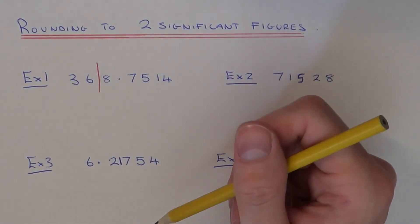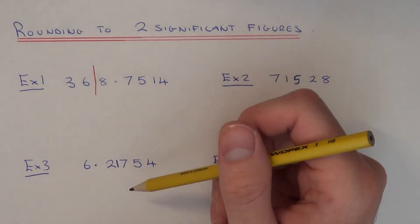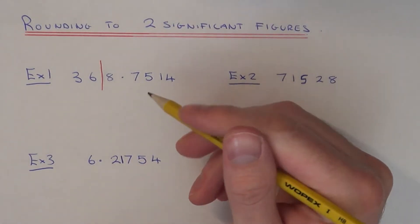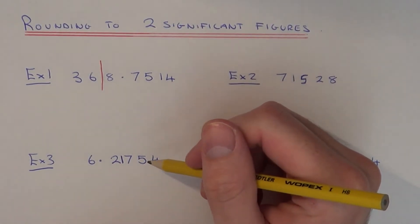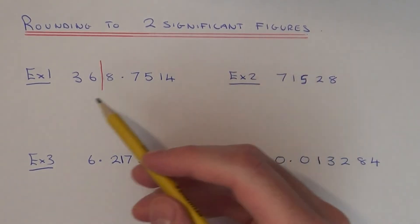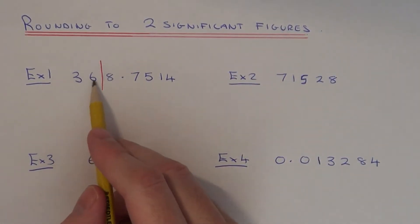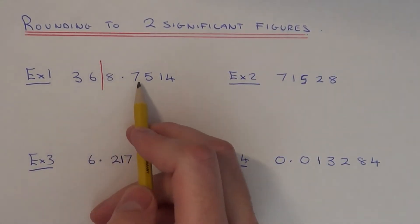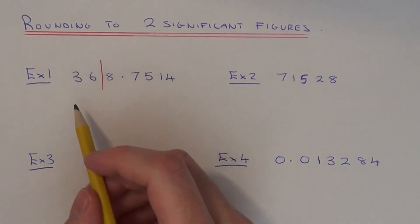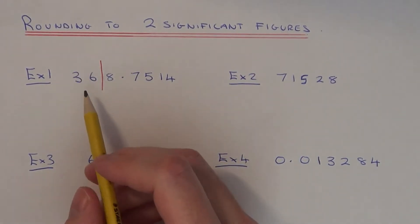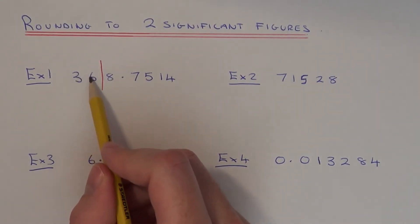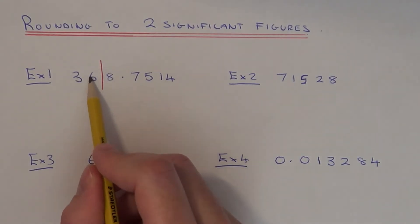Today I'm going to show you how to round a number off to two significant figures. That is two non-zero digit numbers from the start of the number. So let's have a look at example one. We've got 368.7514, and we've got to round it off to two significant figures — that's two numbers from the start which aren't zero.